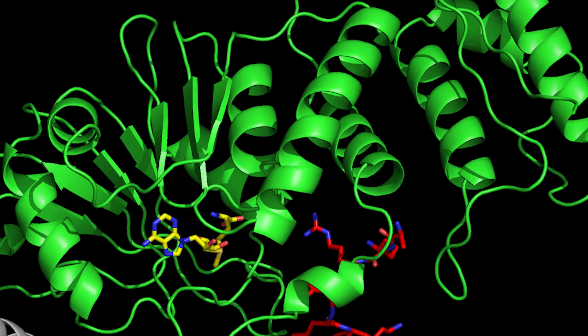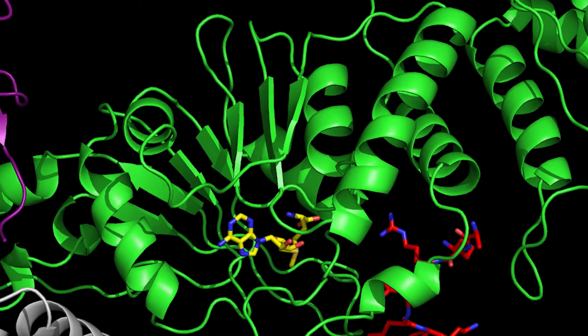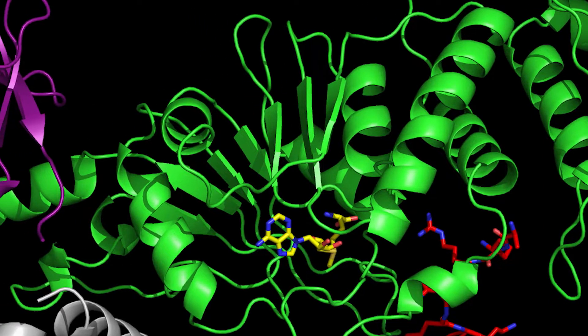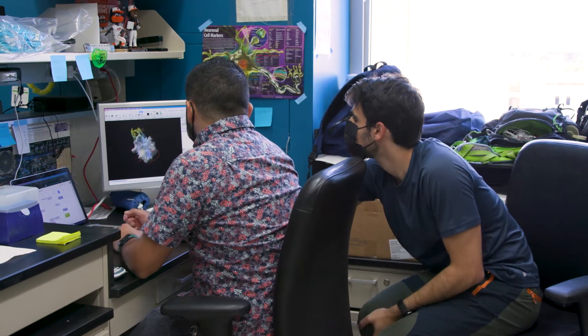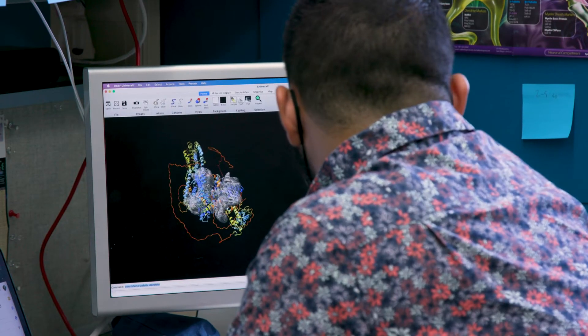These are attached to the histone proteins that package our genome into a complex called chromatin, and that attachment and removal of these modifications plays a central role in regulating how genes are turned on and off. We study that at a very mechanistic level, and so a very important tool that we use is cryo electron microscopy.